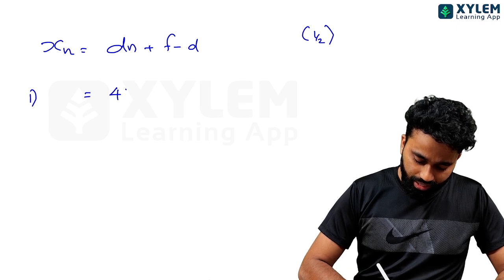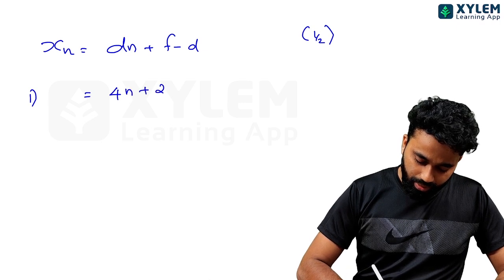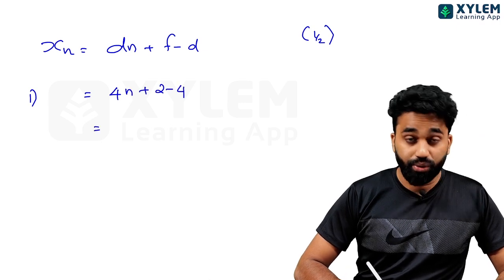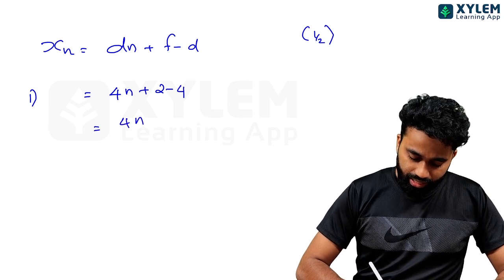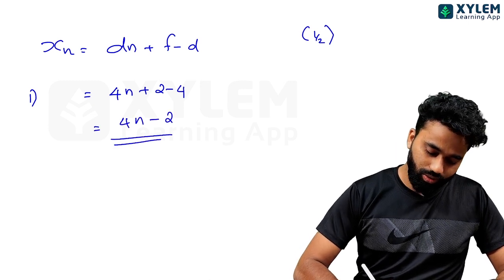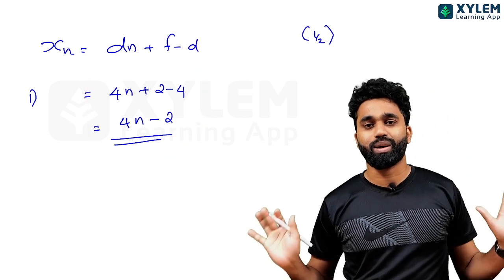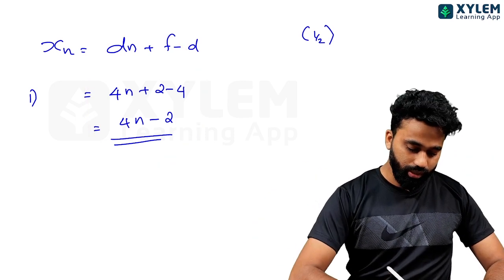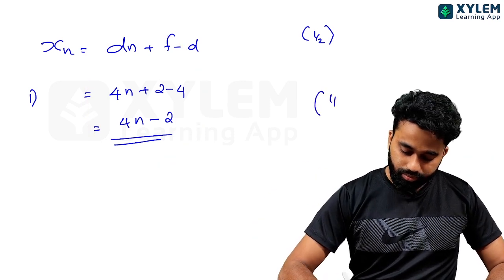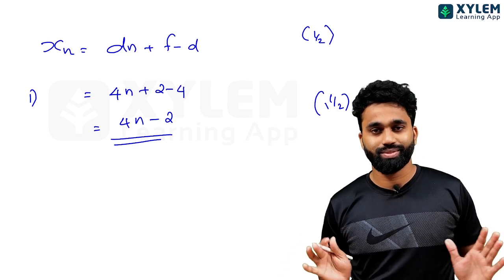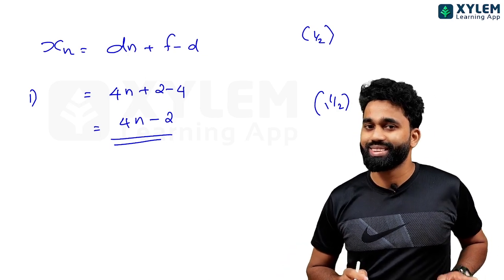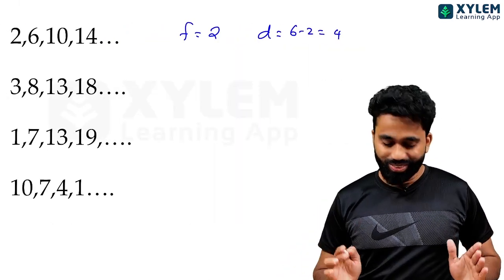F is 2, D is 4. F is 2, plus 2 minus 4. F is 4, is 2. Now 4 and 4 is minus 2. That is the answer. One answer is this is 2 marks. One mark is 1. Full mark. Okay.